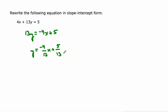And 5 divided by 13 is 5 thirteenths. If those fractions could have been simplified, I should have simplified them as well, but they can't. So that's our answer. y equals negative 4 thirteenths x plus 5 thirteenths.